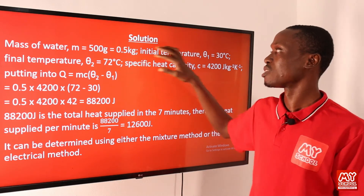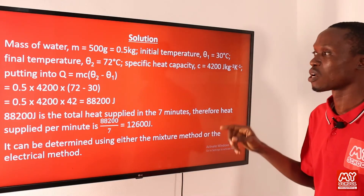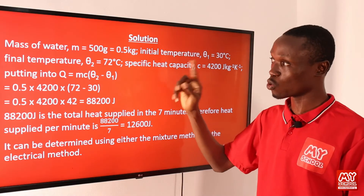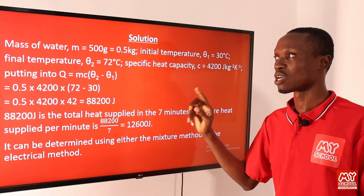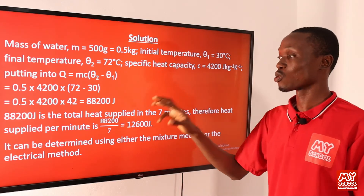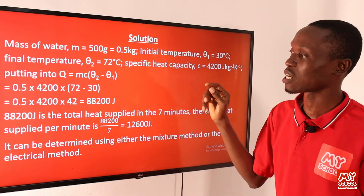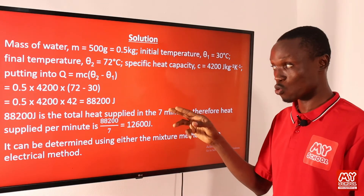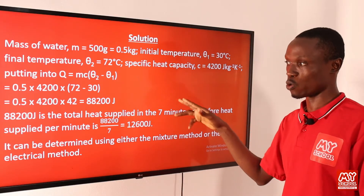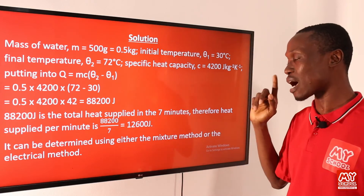Substituting into Q = mcΔθ: Q = 0.5 × 4200 × (72 − 30) = 0.5 × 4200 × 42, which equals 88,200 joules.